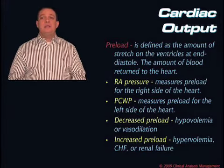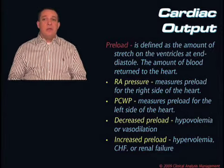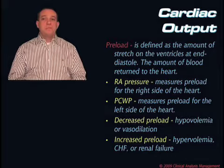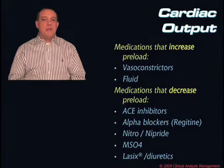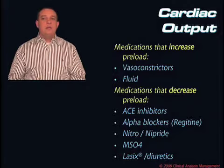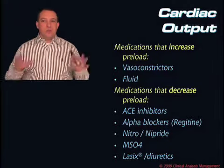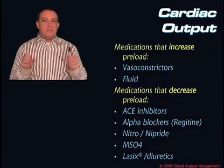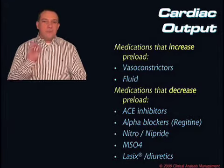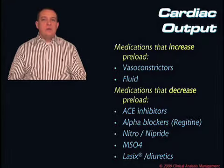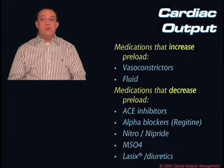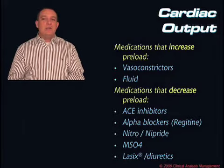Things that decrease preload include hypovolemia and vasodilation. Things that increase preload include hypervolemia, CHF, or renal failure. To increase preload with medications, we basically have two options: first, we could give vasoconstrictors — by vasoconstricting everything down, we make the vascular space smaller so the fluid is under higher pressure. Second, and the main way, is simply giving the patient more fluid. If their preload is low because they're fluid depleted, we give them fluid to increase preload.